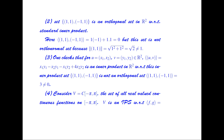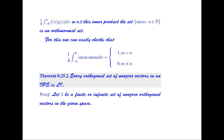Consider the set of all continuous real-valued functions on the interval [-π, π]. This is an inner product space with inner product ⟨f, g⟩ = (1/π)∫_{-π}^{π} f(x)g(x) dx. With respect to this inner product, the set {sin(nx) : n ∈ ℕ} is an orthonormal set, since the integral (1/π)∫_{-π}^{π} sin(nx)·sin(mx) dx equals 1 when m = n and 0 when m ≠ n.